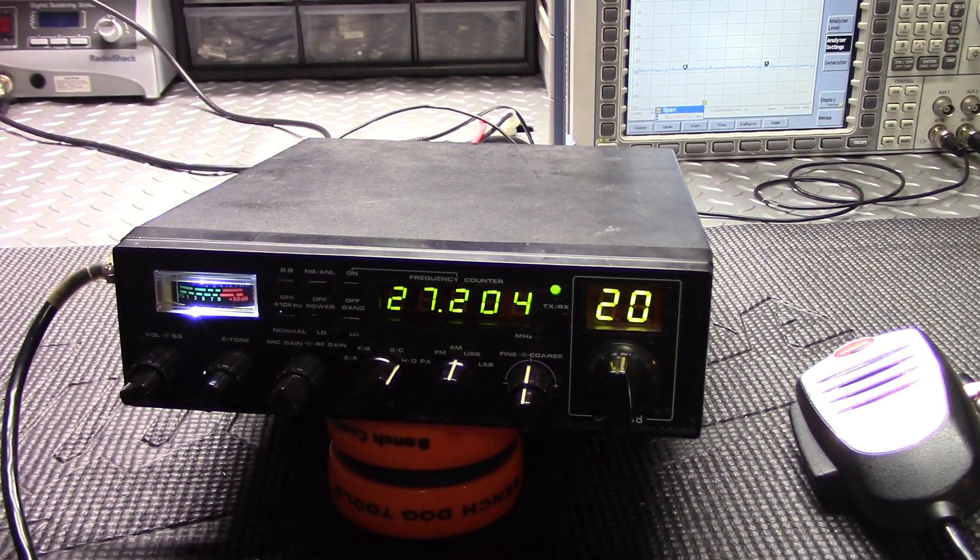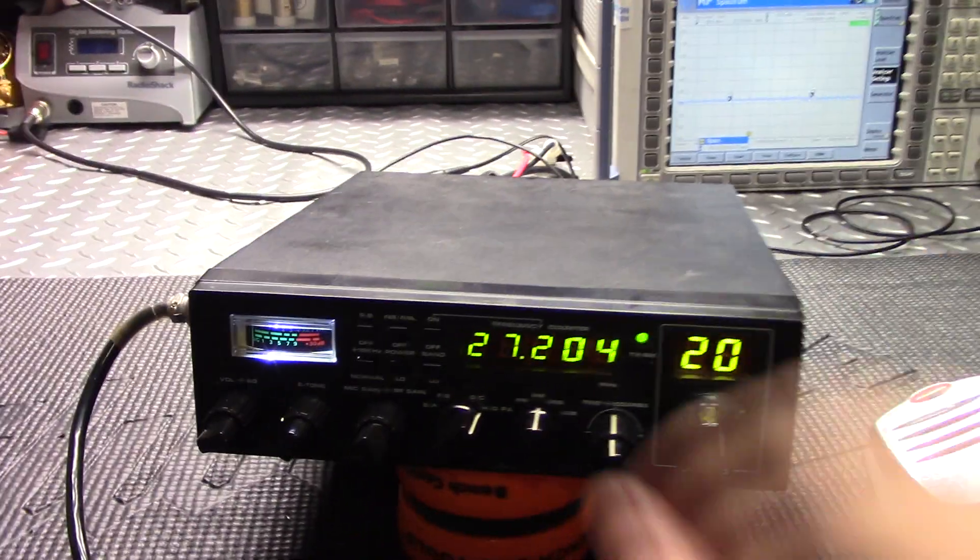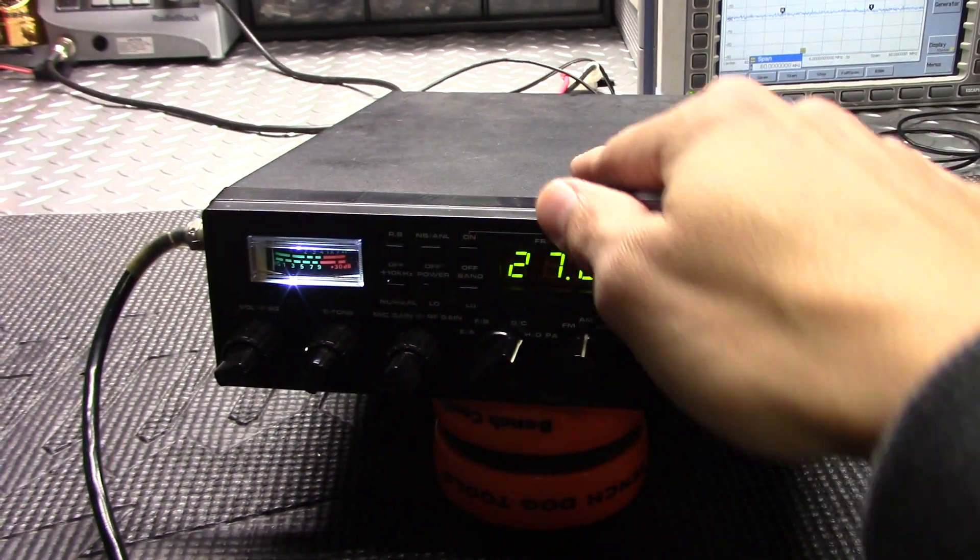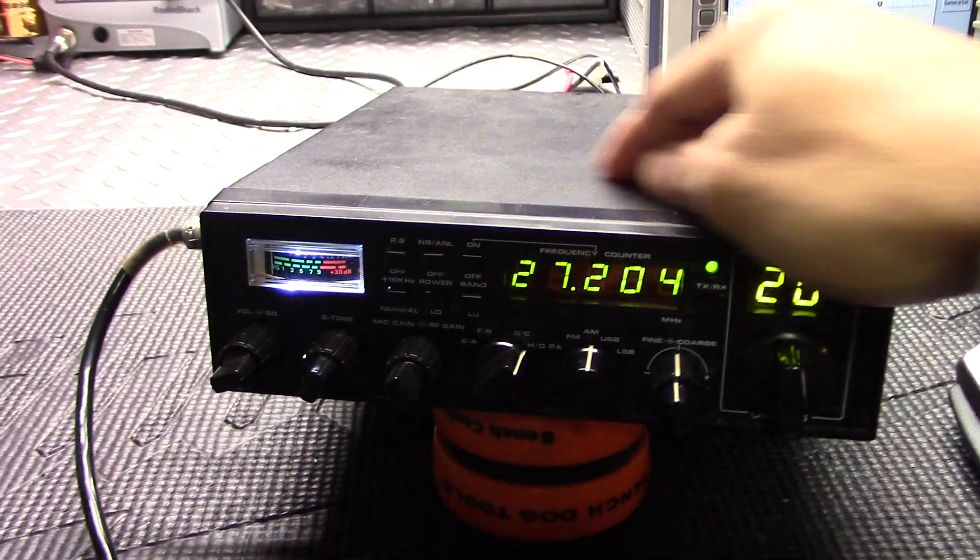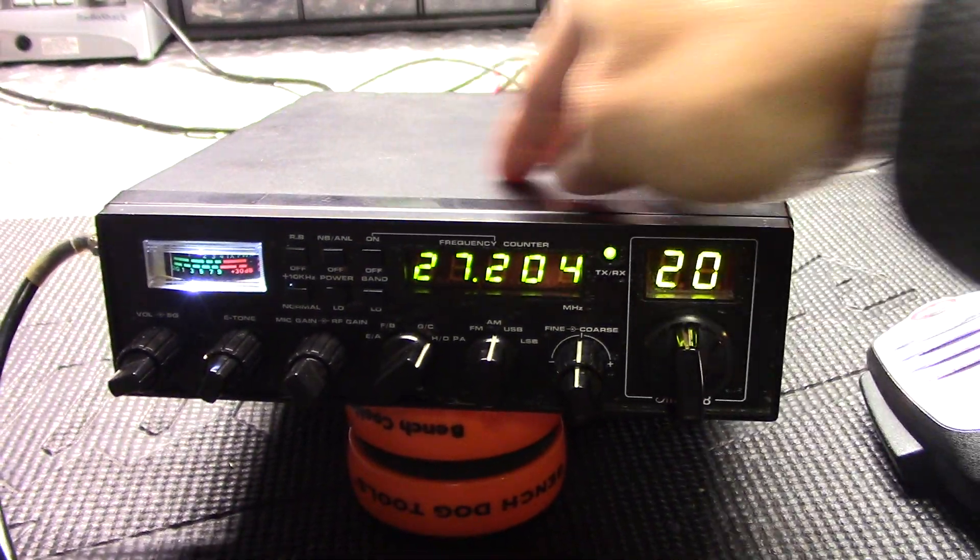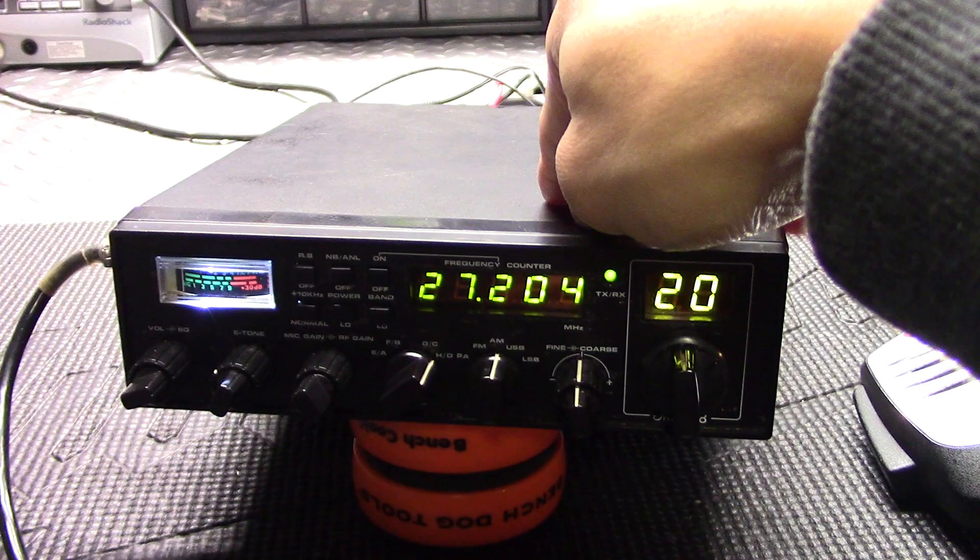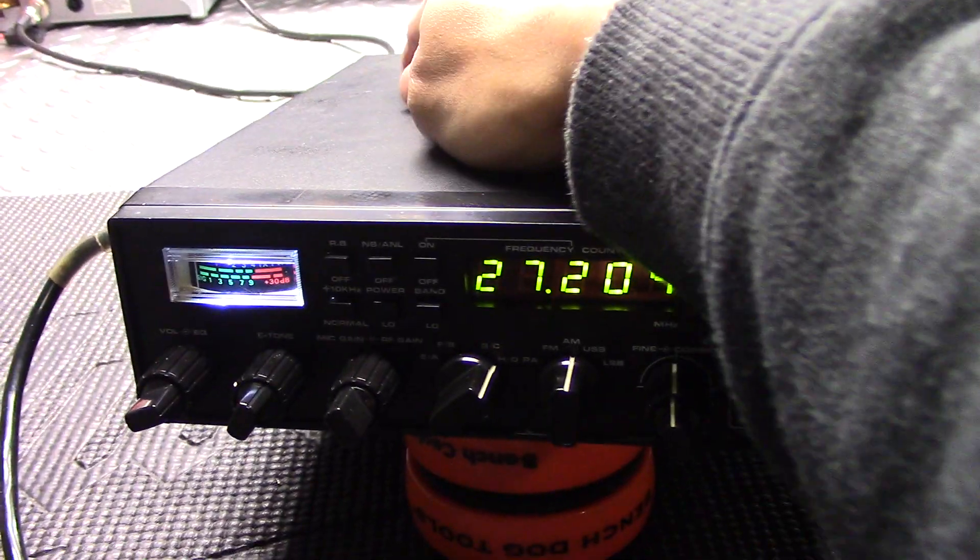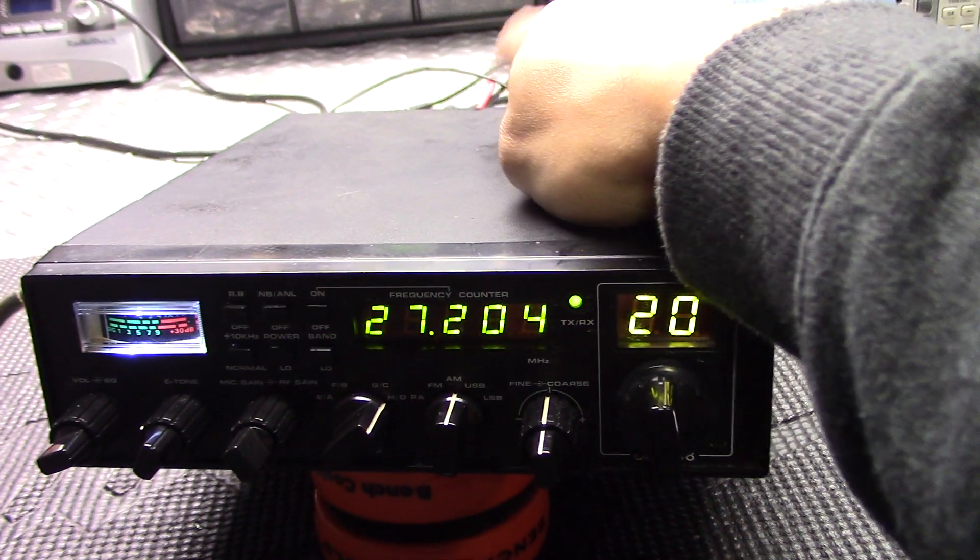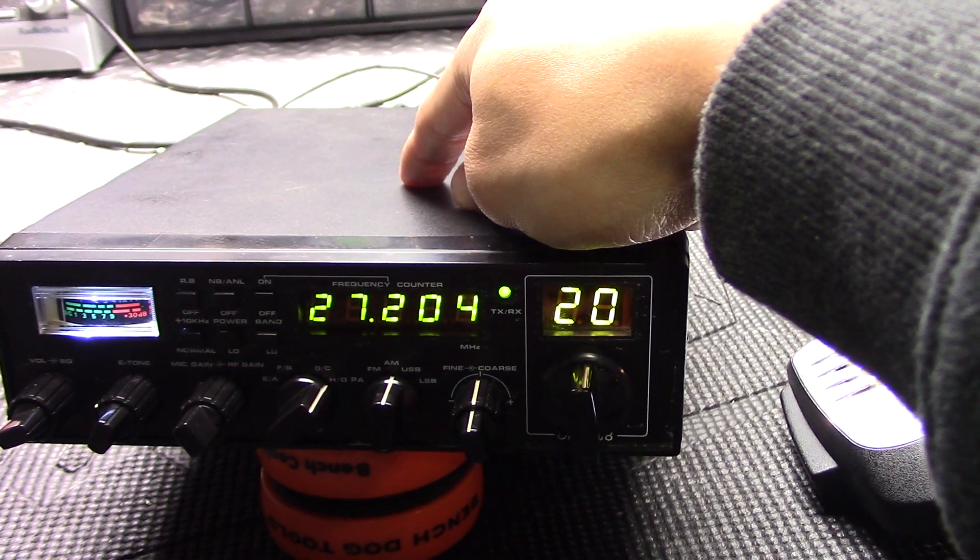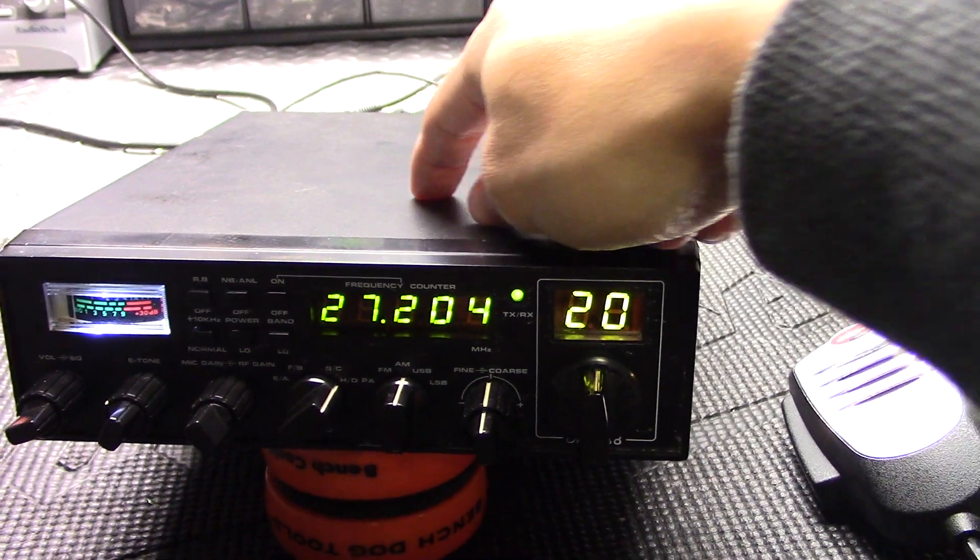Like I said, did the Schottky's, did the unlock the clarifier. We did the white LED meter light. I did a couple caps for you in the transmit section, widened out your transmit frequency a little bit. And let's see, I did a power wire upgrade, did the Teflon wire for the antenna jack coming in from the 239 connector.